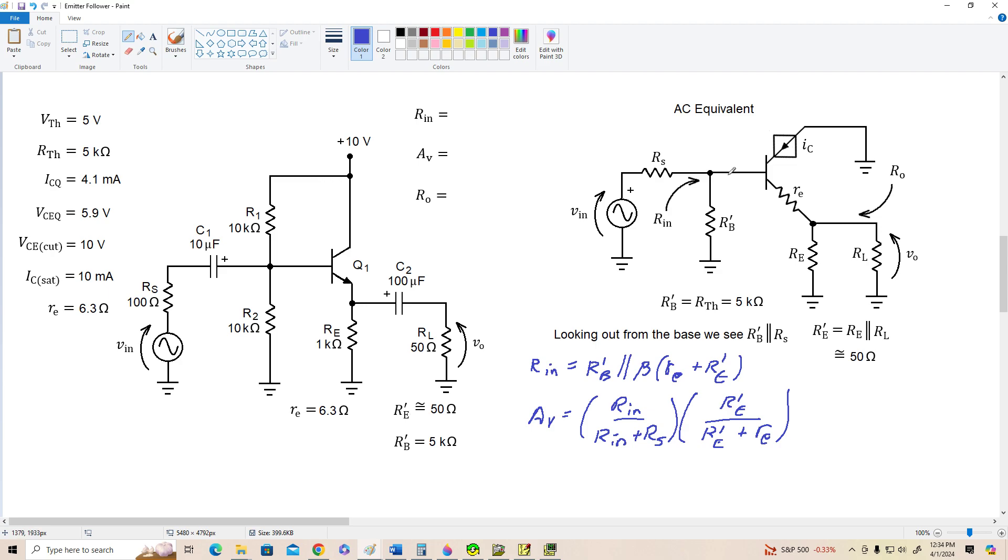But since we're looking into the emitter, and this is in the base, it appears divided by beta in value. So what this all boils down to is that the output resistance that this load thinks it's being driven by is RE in parallel with little RE plus RS in parallel with R'B divided by beta.